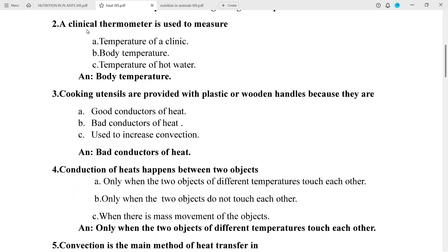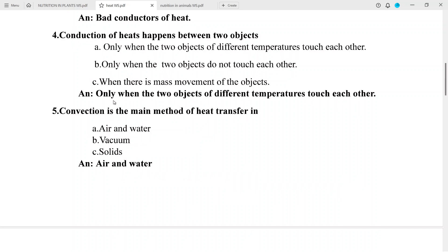Question 2: A clinical thermometer is used to measure answer: body temperature. Question 3: Cooking utensils are provided with plastic or wooden handles because they are answer: bad conductors of heat.